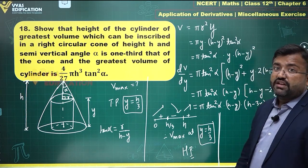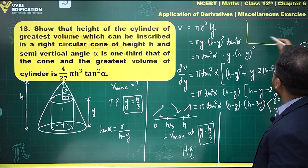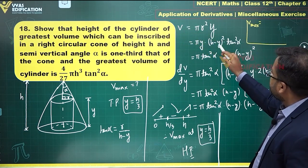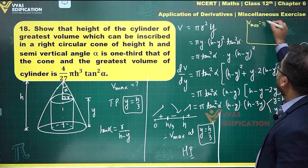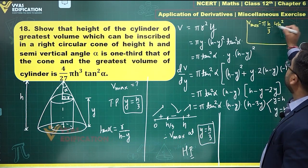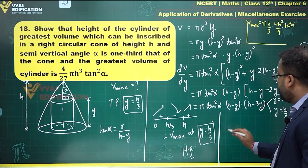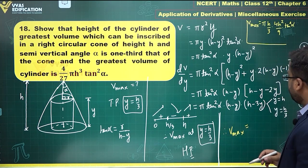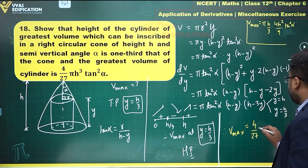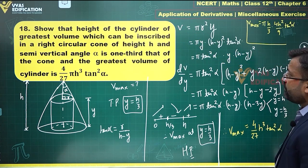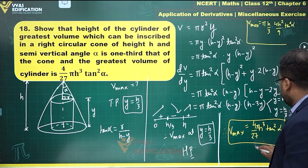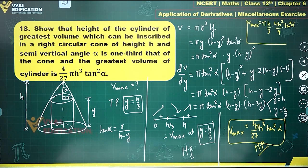The next part is to find V_max. At y = h/3, r² = (h - h/3)²·tan²α = (2h/3)²·tan²α = 4h²/9·tan²α. So V_max = π·(4h²/9·tan²α)·(h/3) = 4π/27·h³·tan²α. Don't miss the π: V_max = 4π/27·h³·tan²α. That is the complete proof and solution.